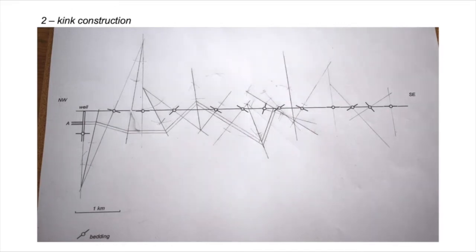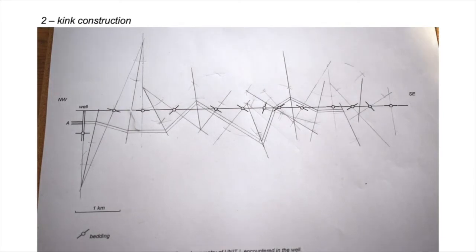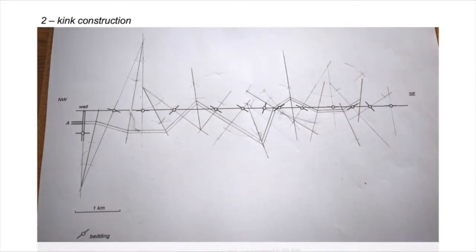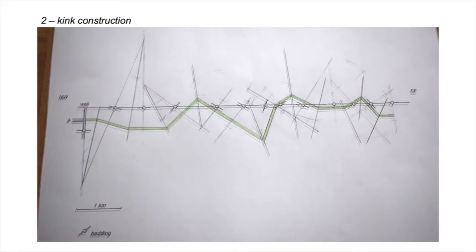We add another bisector — another axial trace — with a little dip panel segment, then another bisector and dip panel all the way through. Continuing to the edge of the section, our completed bed for the kink band construction is finished. It's all pretty kinky — colored in, there we have our complete bed geometry for this second construction technique.